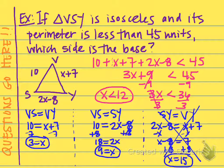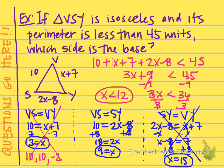Let's go back and check out the other two. When x is 3, VS and VY were congruent. So let's plug in x equals 3 into all three sides. VS would equal 10, VY would be x plus 7 or 3 plus 7, so it would be 10. And if I plug in 3 into 2x minus 8, that's 2 times 3 is 6 minus 8, giving me negative 2. Unfortunately, I cannot have a side with a negative length, so this scenario is also out. It has to be the middle scenario — we need to evaluate each side when x equals 9 to figure out which side is the base.